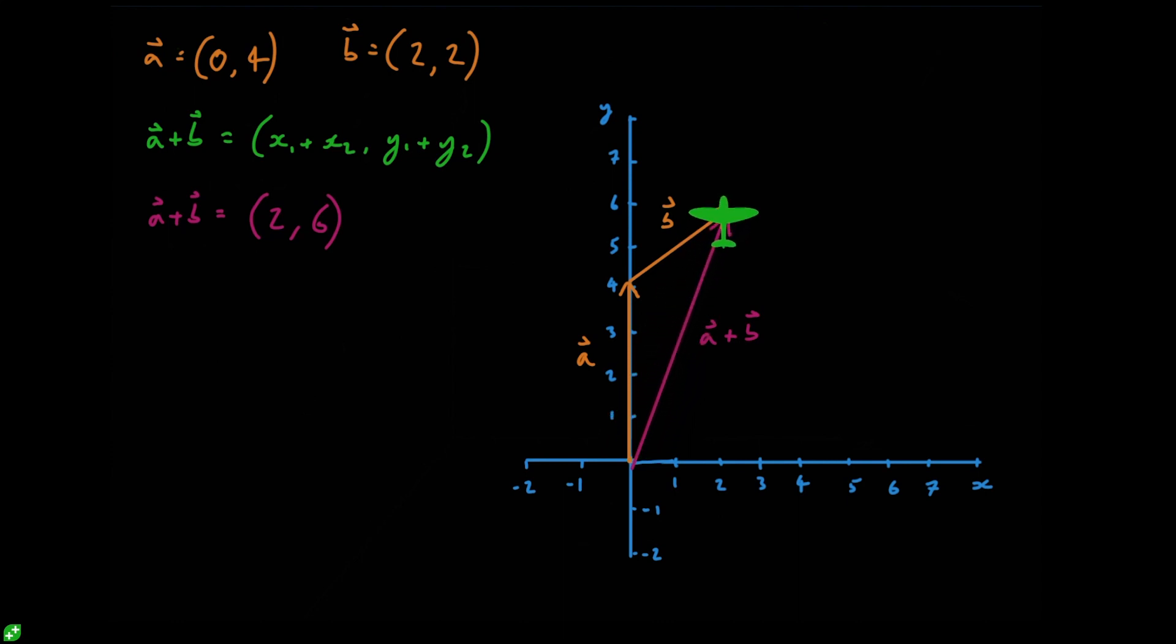But I want to show you another way of looking at this as well. So first off let's remove our graph entirely to make things a little bit clearer, and now let's bring back our original vector that we drew for our wind.